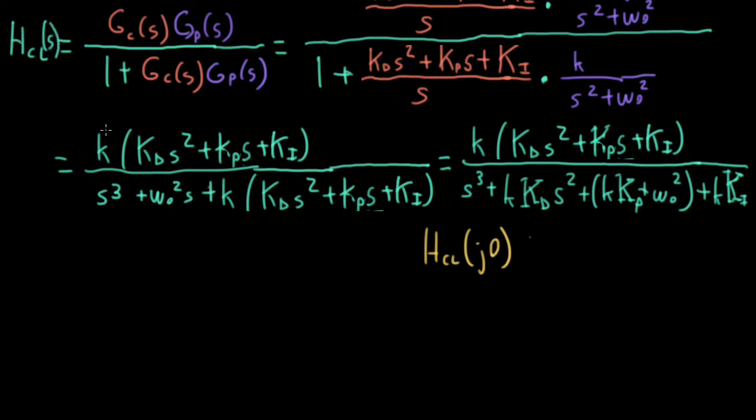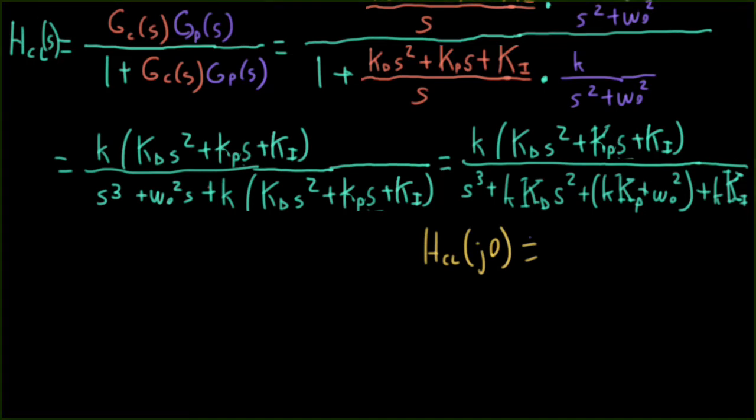And plugging in j omega for s, and then plugging in zero for omega to get the dc response. Well, if I plug in j zero for s, then all of these terms here go away. Oh, I also need an s here. Okay, there we go. Anyway, I'm left with just k, capital Ki over little k, capital Ki, which is equal to one. So this means that this system can track a unit step. All right, so that's a useful thing.